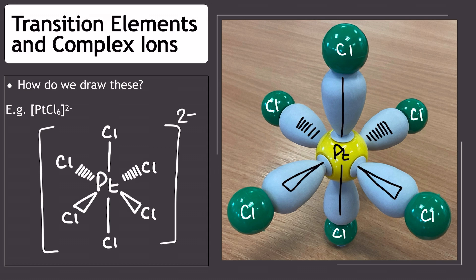Here, for instance, each chloride ligand has a negative 1 charge, and there are 6 of them. Since outside the square brackets we've got a 2- charge, that means the platinum must be plus 4.